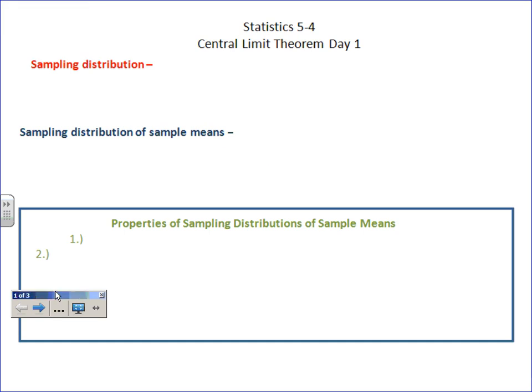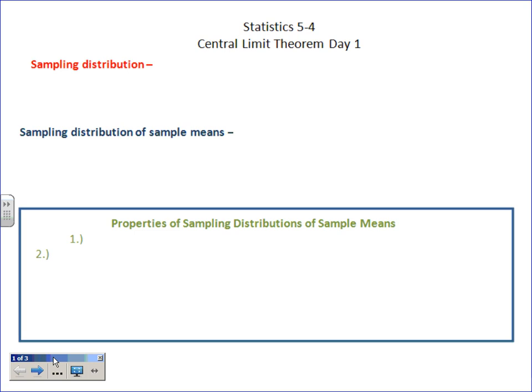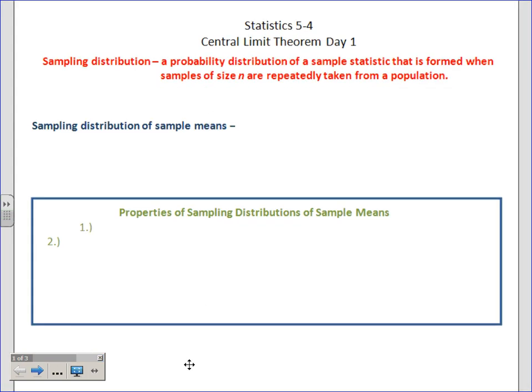Here we begin our trip into the central limit theorem; it's going to take a few days because I want to take it slow. We've used the word 'sampling distribution' several times. It's obviously a distribution, but it's a little more complicated than that — it's a probability distribution of some sample statistic. It doesn't have to be the mean; it could be range, median, or mode. It's formed when samples of size n are taken.